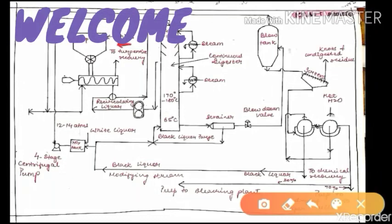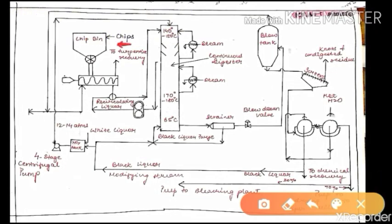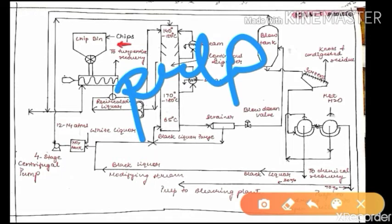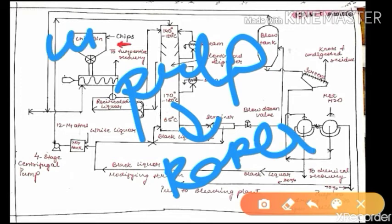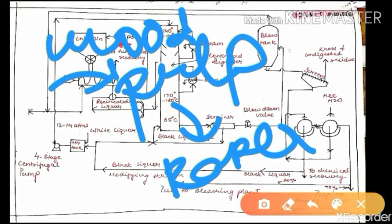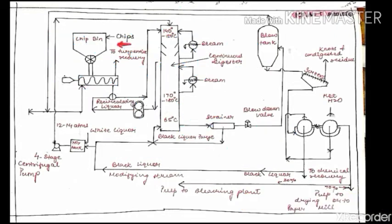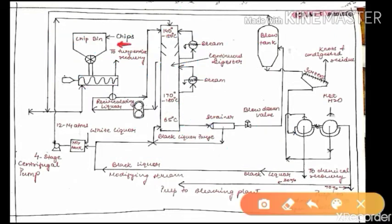Hello everyone. Here I have come with another new video on chemical technology. Today we'll study the manufacturing process of pulp. Pulp is the basic raw material for paper, and we'll see how wood is changed into pulp and finally how pulp is changed into paper. It is quite interesting, so without wasting any time, let us start with the explanation of the flow sheet.